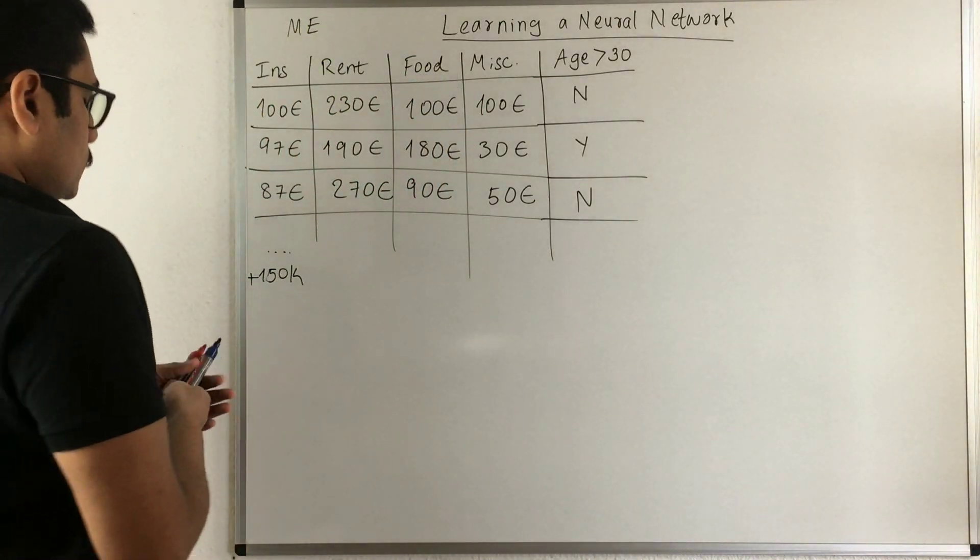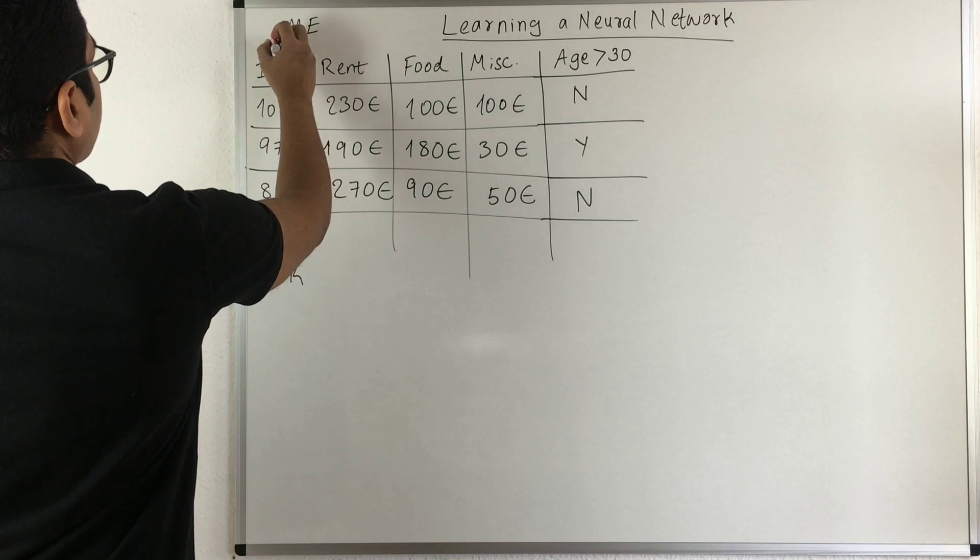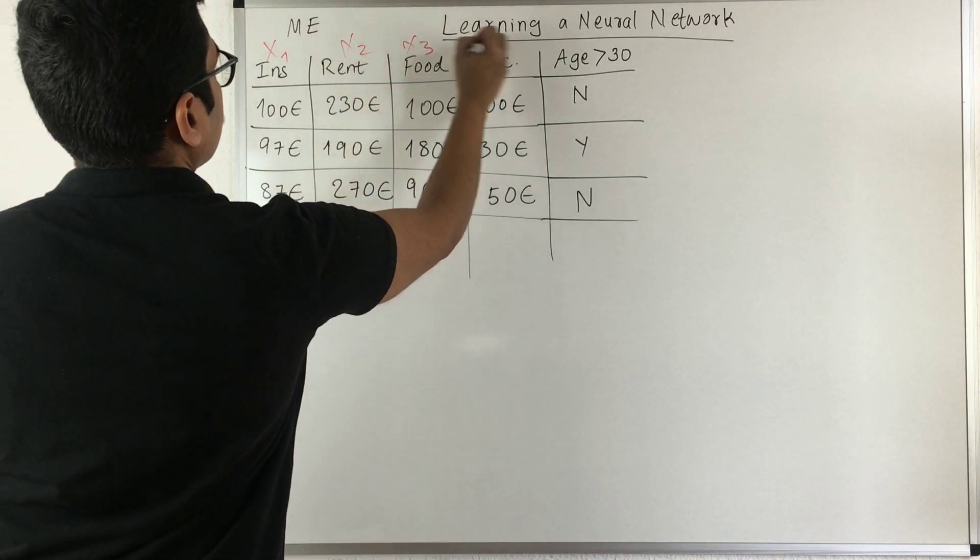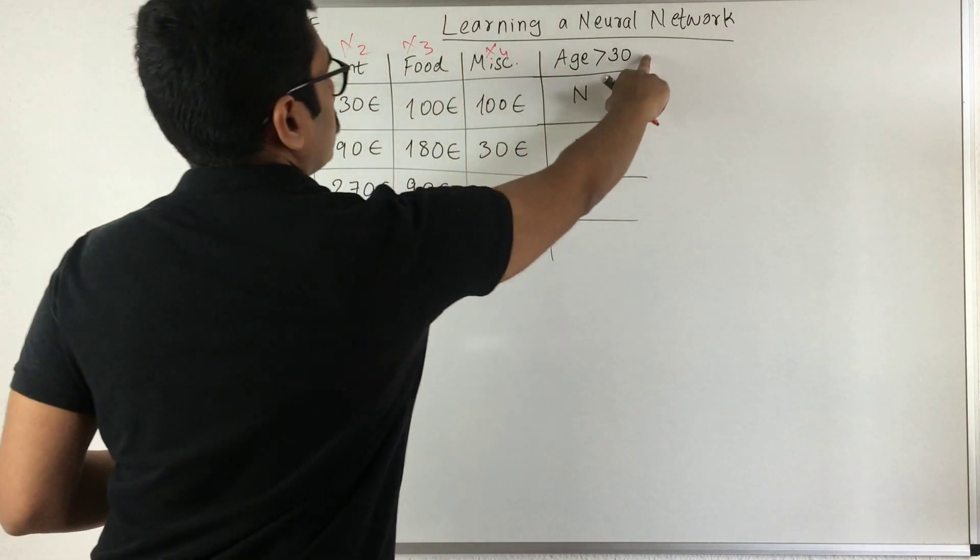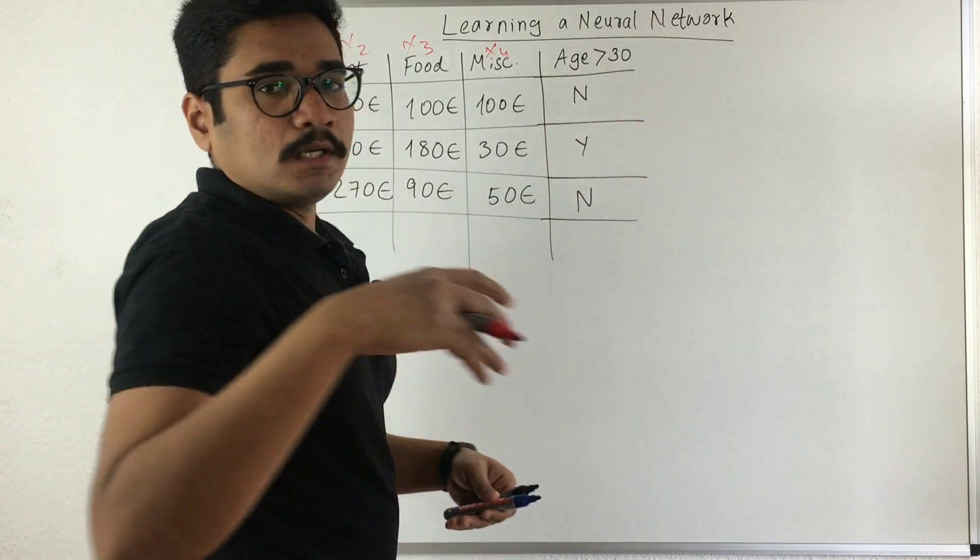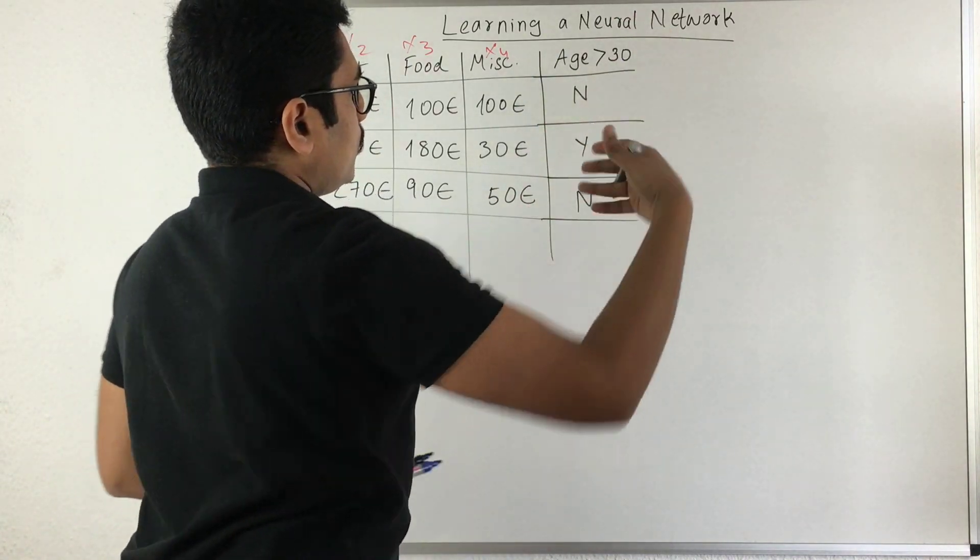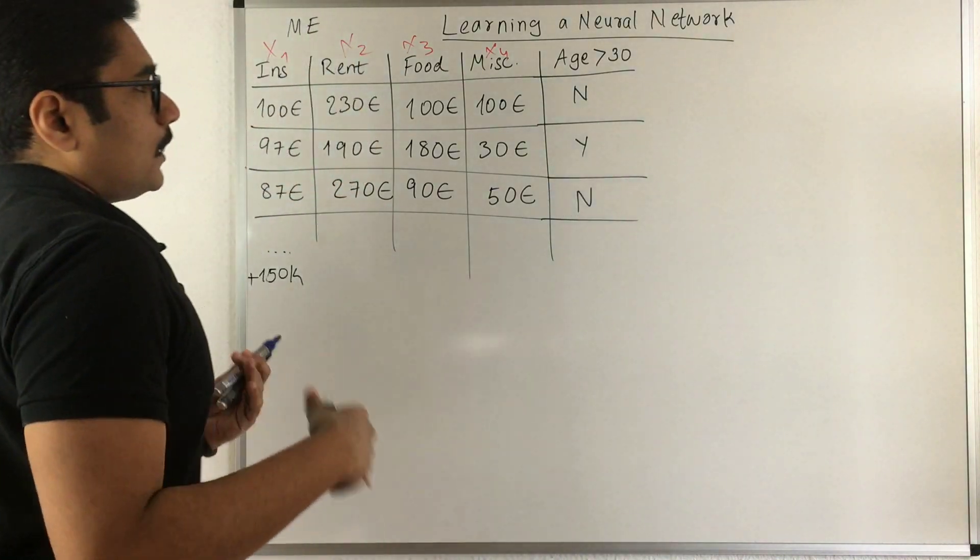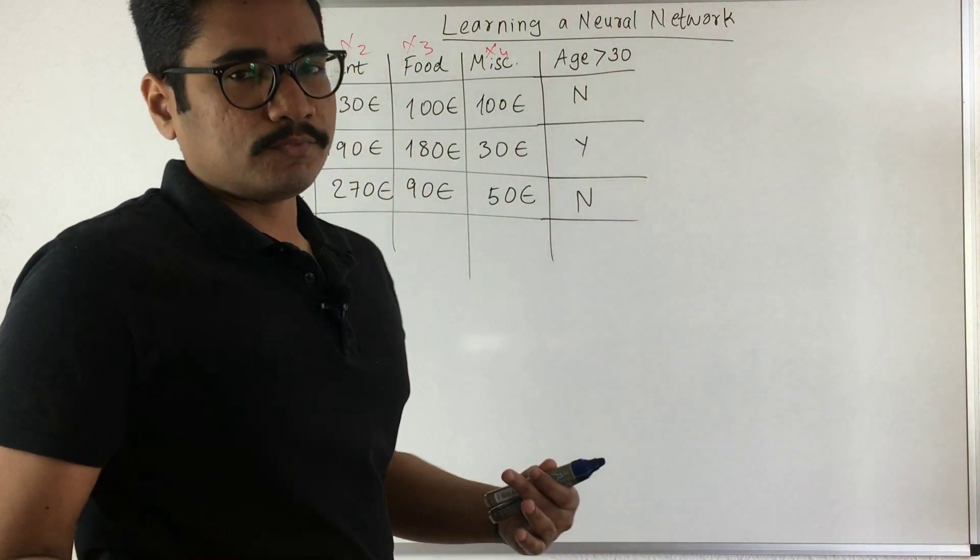So what we do is I label this as my input. I have x1, x2, x3, and x4. And this is the class - essentially a binary attribute, yes or no. So I would be using a sigmoid function.